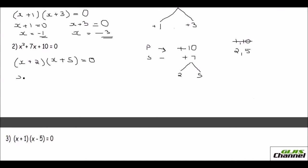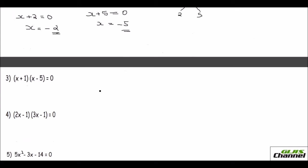Equating x plus 2 to 0 gives x equals negative 2, and equating x plus 5 to 0 gives x equals minus 5.